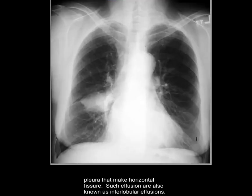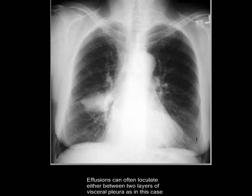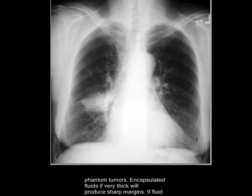Such effusions are also known as interlobular effusions. Effusions can often loculate either between two layers of visceral pleura, as in this case, or between parietal and visceral pleura against the chest wall. Such effusions are also known as phantom tumors. Encapsulated fluid, if very thick, will produce sharp margins. If the fluid is thin, it may produce unclear areas of density, which may mimic consolidation or collapsed lung.